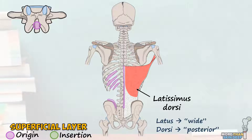Latissimus dorsi condenses superiorly into a single tendon that spirals before inserting into the intertubercular sulcus of the humerus. This spiraling means that the fibers originating from the most inferior part of the muscle insert into the most superior part of the humerus, and vice versa.